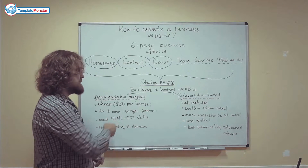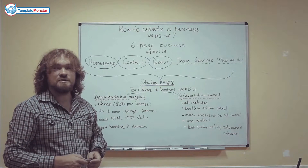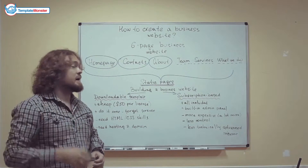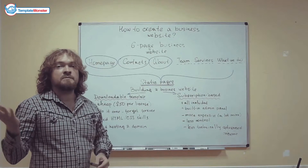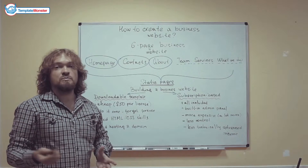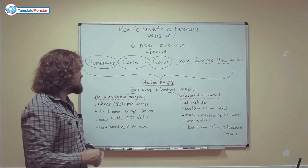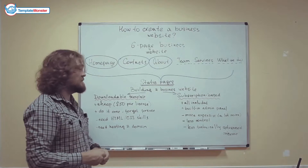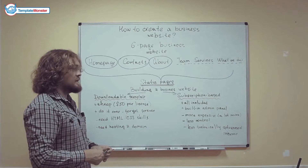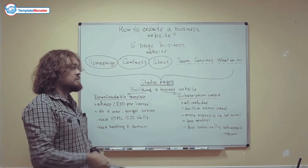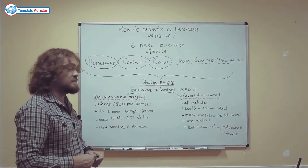If you don't want to mess with the HTML code, you may purchase a CMS-based template — like a WordPress template or a Joomla template. They will be slightly more expensive, around $75 per license, but this is still a lot cheaper than using a subscription-based service.